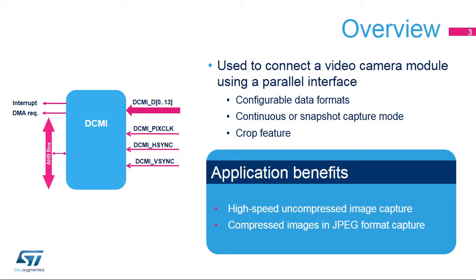The DCMI interface is used to connect a parallel camera module to the STM32. The camera generates a parallel data flow together with a pixel clock signal, DCMI PixClock, which allows the interface to capture the incoming data flow. Two optional signals, H-Sync and V-Sync, may be used to synchronize the image frame between the camera and the STM32. The DCMI also supports line and frame synchronization code in the data flow.